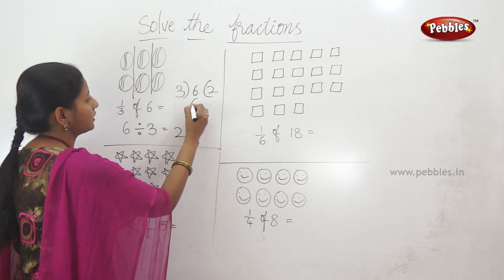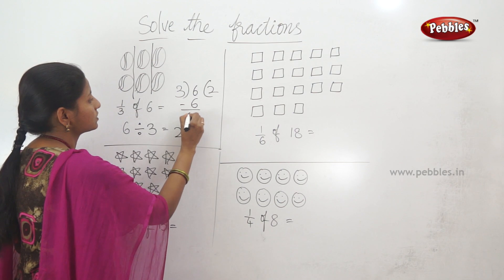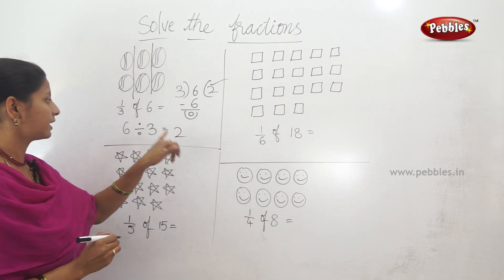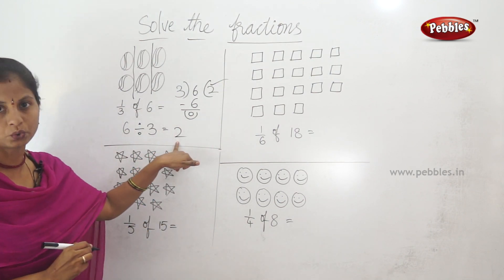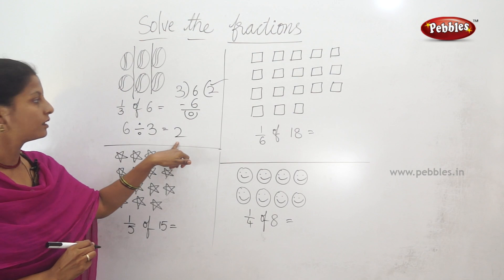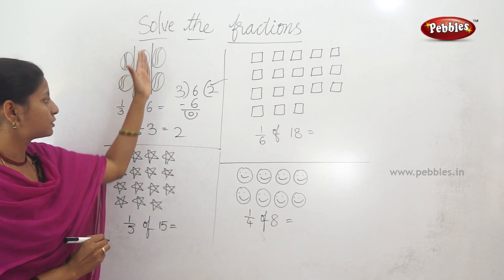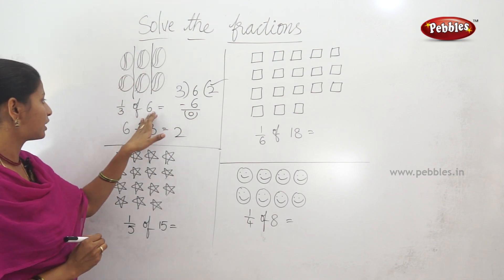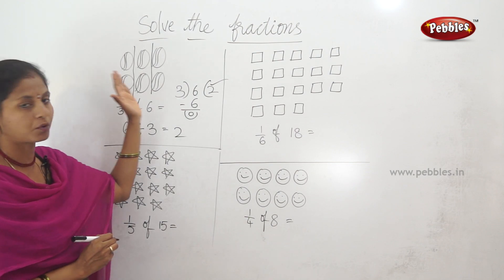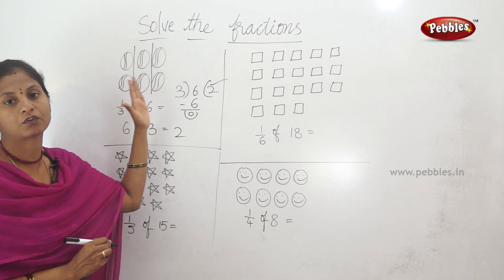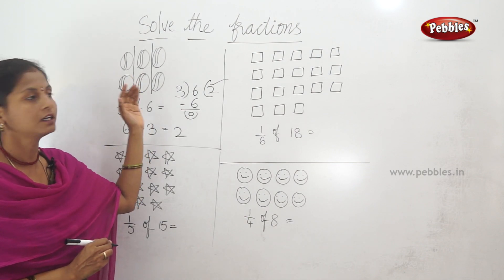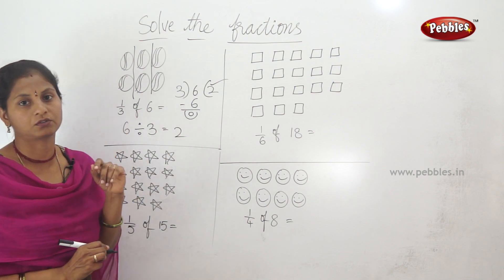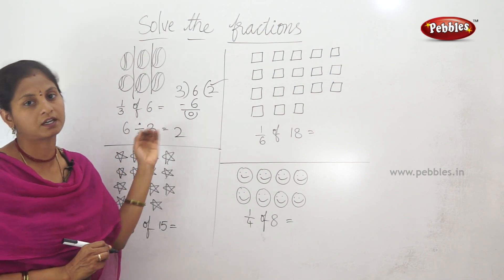Let's do the division. 3 divided by 3. So here we go — 2 is the answer. If the picture comes, 3 equals 1 by 3 of what? 6 equals 2.